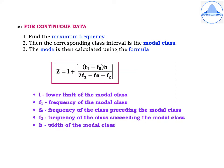For continuous data, the first step is to find the maximum frequency. Second, the corresponding class interval is found and it is called the modal class. Third, the mode is calculated using the formula: Z = L + [(F1 − F0) × H] / [2F1 − F0 − F2], where L is the lower limit of the modal class, F1 is the frequency of the modal class, F0 is the frequency of the class preceding the modal class, F2 is the frequency of the class succeeding the modal class, and H is the width of the modal class.